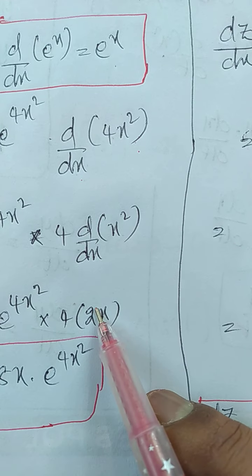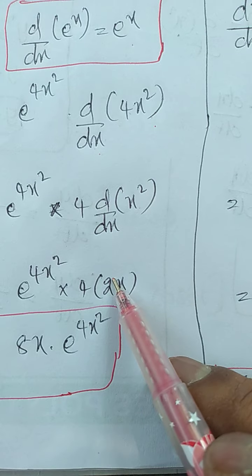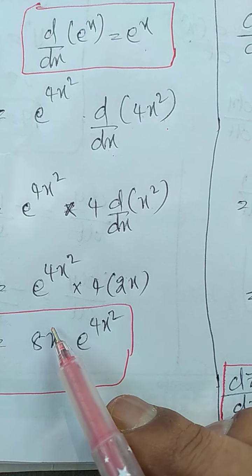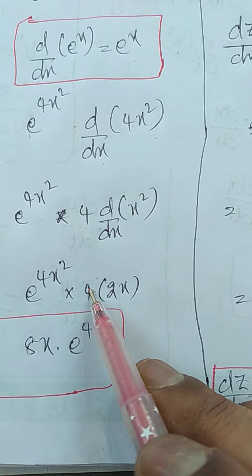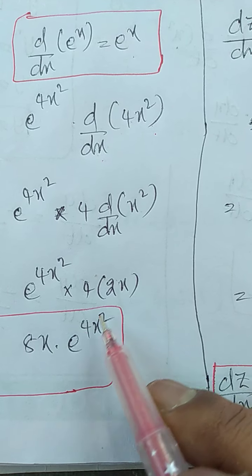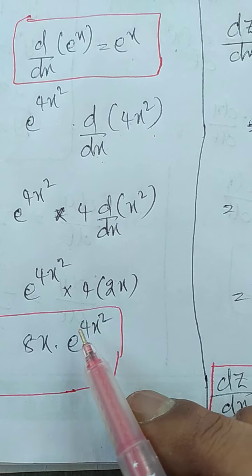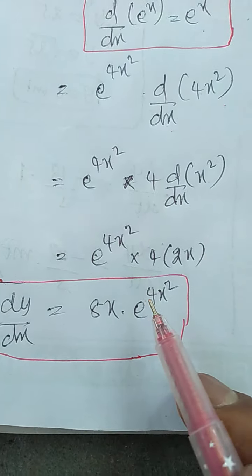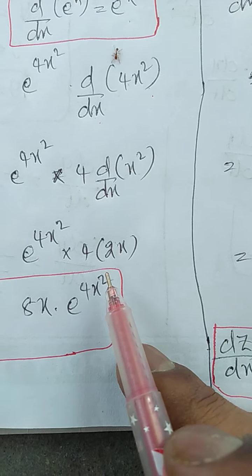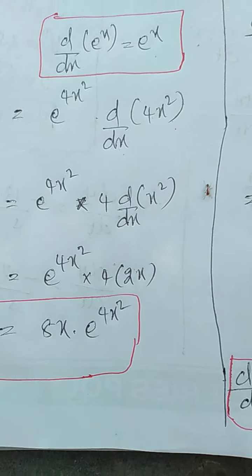4 into the derivative of x² equals 4 into 2x. Therefore, e to the power of 4x² into 4 into 2x gives 8x. Therefore, dy/dx = 8x · e to the power of 4x².